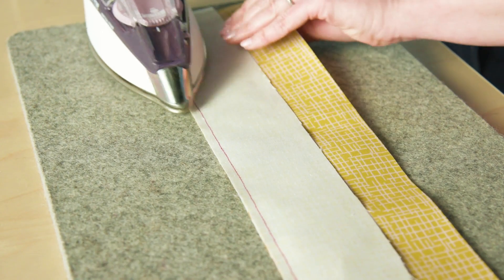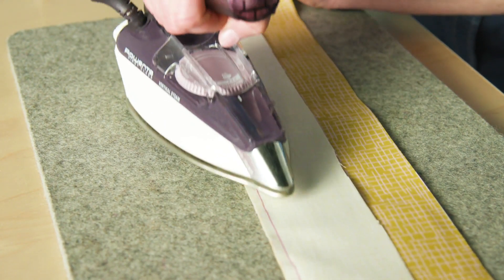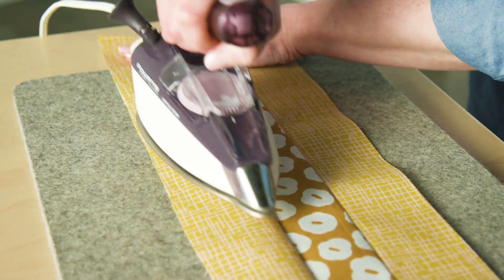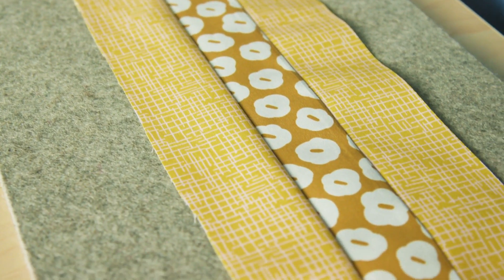With each strip added, set the stitching with your iron. Fold the top strip back and gently press the seam open on the right side.